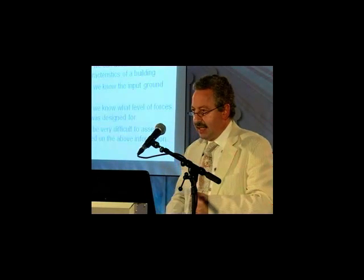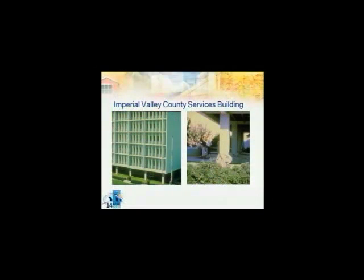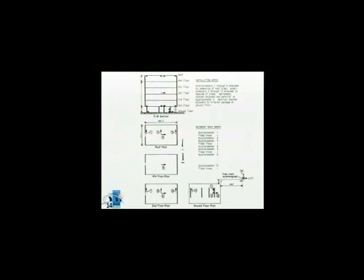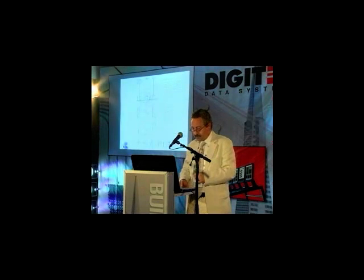Let me give you an example. Let's take a look at the Imperial Valley County Services Building, which was damaged during the 1979 Imperial Valley earthquake. All the line of columns are busted at the base level. Now, this building was instrumented — not a whole lot of instruments, but it was enough instrumentation to capture the accelerations, and from the accelerations, deduce the inter-story drifts. Approximate, but good enough.